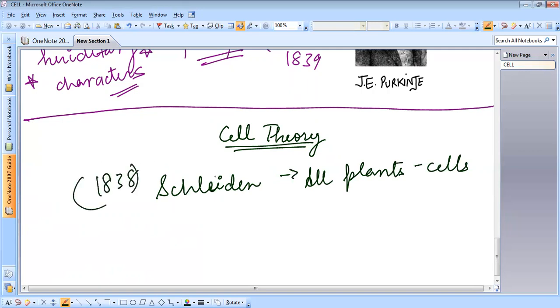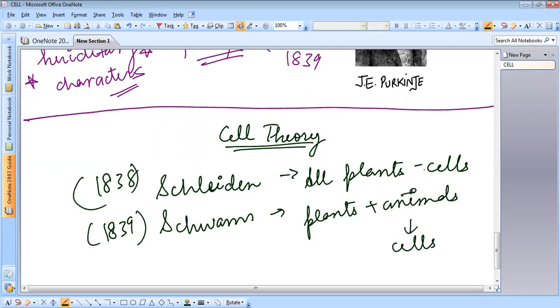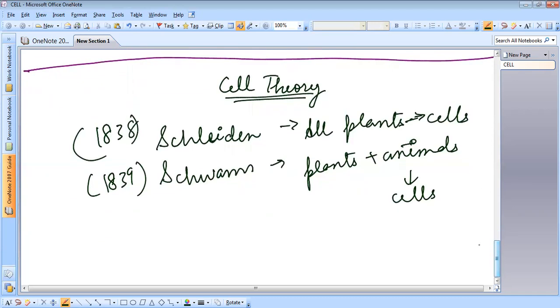Next, one year later, Theodor Schwann, he was a German zoologist, independently asserted that all animals and plants are made up of cells. So, this happened in the year 1839. He said that plants and animals, both of them are made up of cells. This gave the foundation of the cell theory.